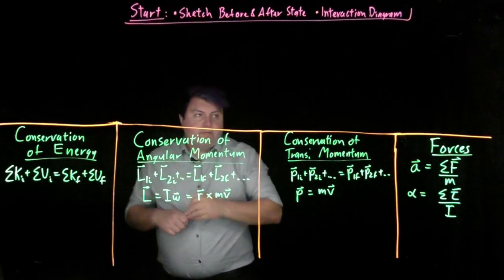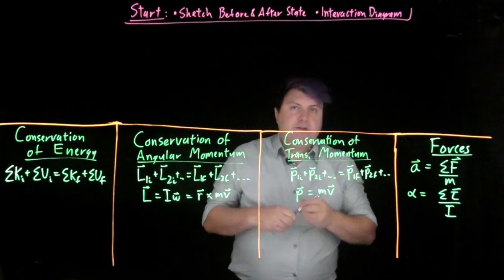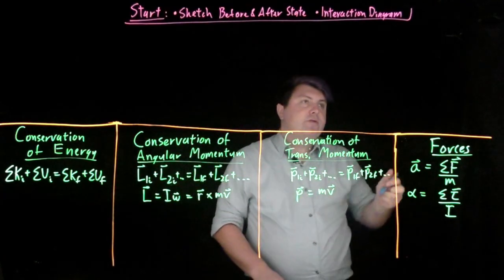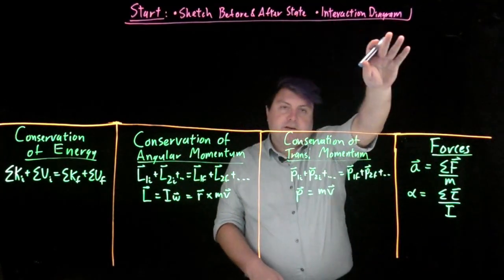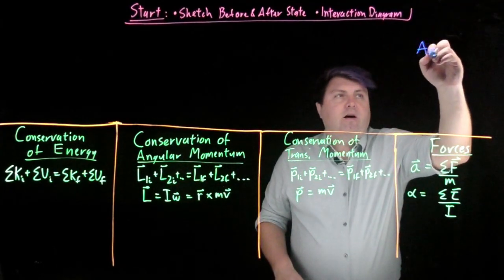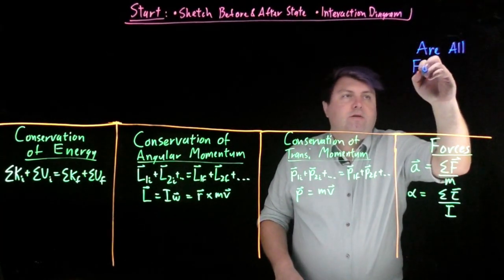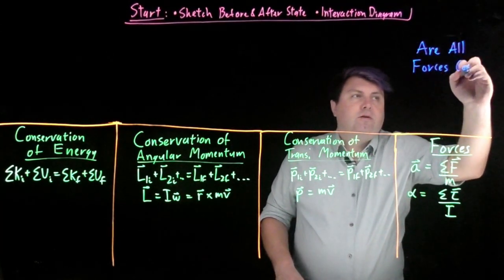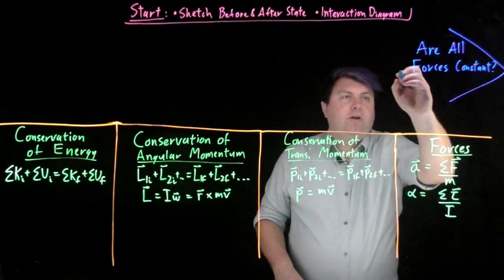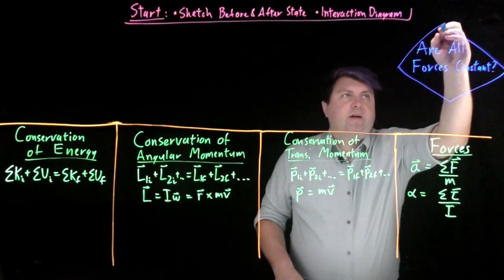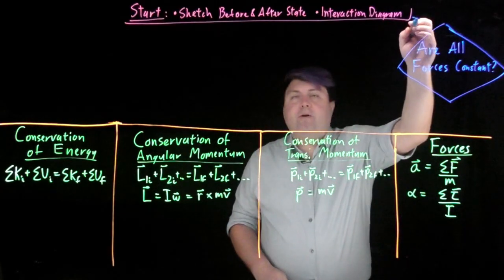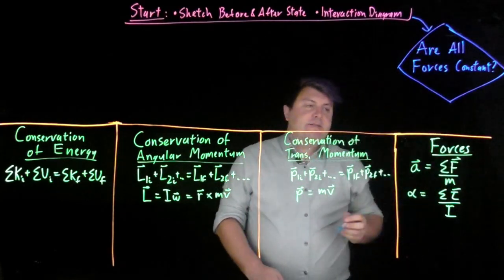So once we've started, then we're going to start asking ourselves questions that's going to help us understand which of these to use. So the first question we're going to look at is we're going to look at our interaction diagram. This is going to inform everything else. We're going to ask, are all the forces constant? So we're going to use a decision diamond kind of thing from computer science.